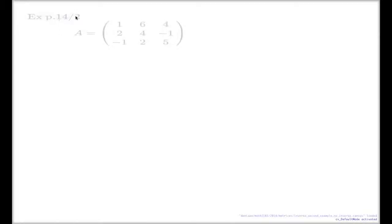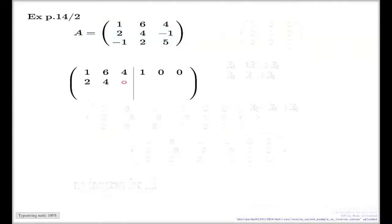This is another example from the lecture notes. Here's a matrix which I claim doesn't have an inverse. Again, I won't be showing all of the arithmetic. Here's the big matrix with the identity on the right-hand side.